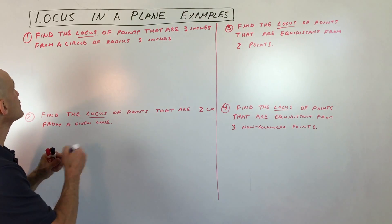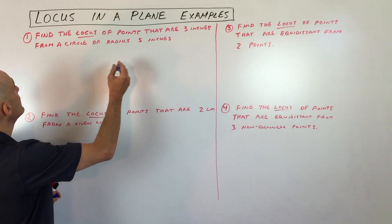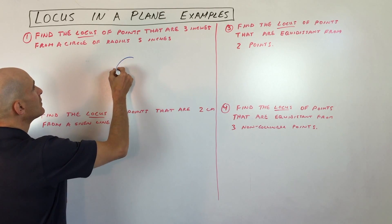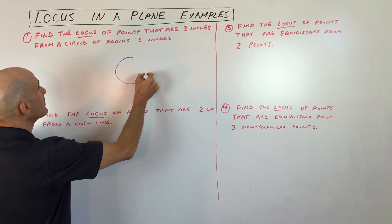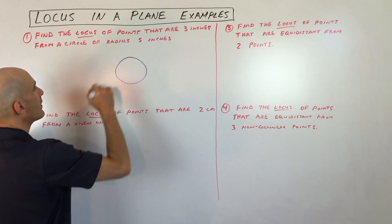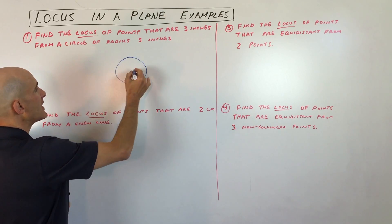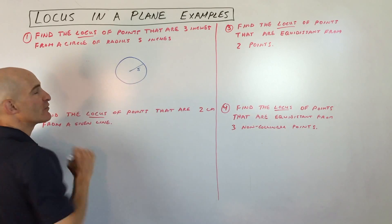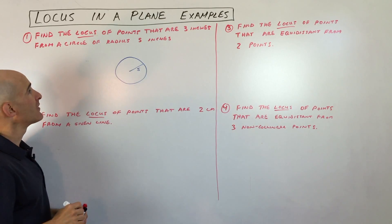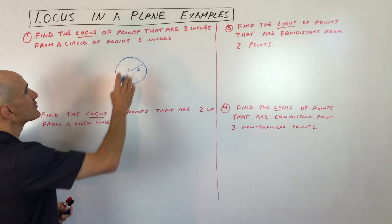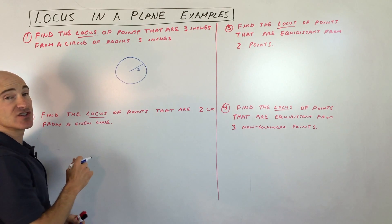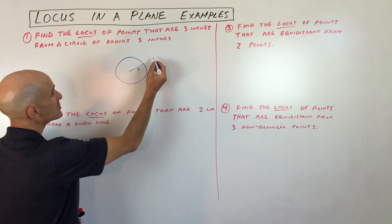Let's draw a circle with a radius of five inches — I'll put a five right there. Now we're looking for the set of points that are three inches from this circle.